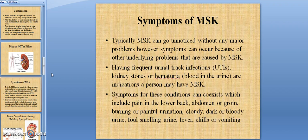Typically, MSK can go unnoticed without any major problems. However, symptoms can occur because of other underlying problems that are caused by MSK. Having frequent urinary tract infections, or UTIs, kidney stones, or hematuria, which is blood in the urine, are indications a person may have MSK. Symptoms for these conditions can co-exist, which include pain in the lower back, abdomen, or groin.